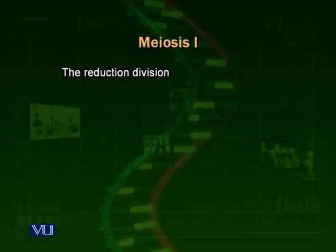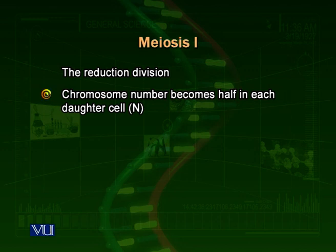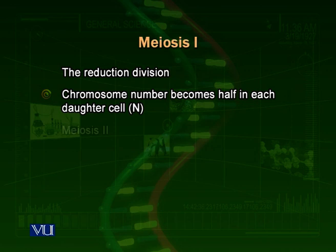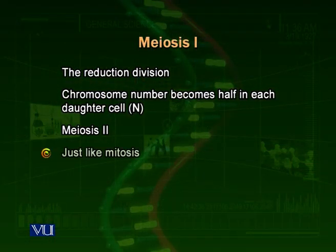Meiosis is also called a reduction division because chromosome numbers become one-half in each daughter cell. Meiosis consists of two stages: meiosis 1 and meiosis 2. Meiosis 1 is technically the reduction division because during meiosis 1 the chromosome number becomes one-half and two daughter cells are formed from one mother cell. Meiosis 2 occurs in both daughter cells separately, each one divides into two further. So ultimately at the end of meiosis we have four daughter cells, but the actual reduction division in which chromosome number is reduced to one-half is meiosis 1. Meiosis 2 is just like mitosis.